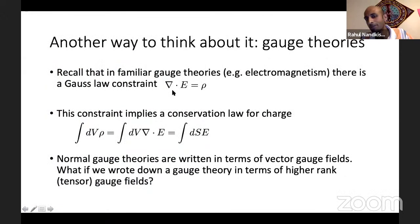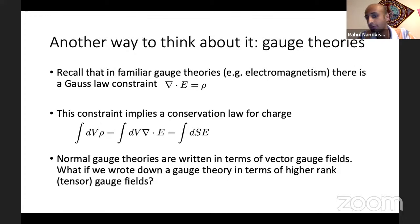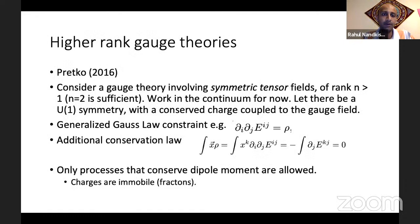Now let me show you a complementary way to think about these fracton models, and that's in terms of gauge theories. We're familiar with gauge theories like electromagnetism. And gauge theories have Gauss-law constraints. A Gauss-law constraint might be something like div E = ρ, where ρ is charge. This sort of Gauss-law constraint implies a conservation law — in this case, it implies conservation of charge.